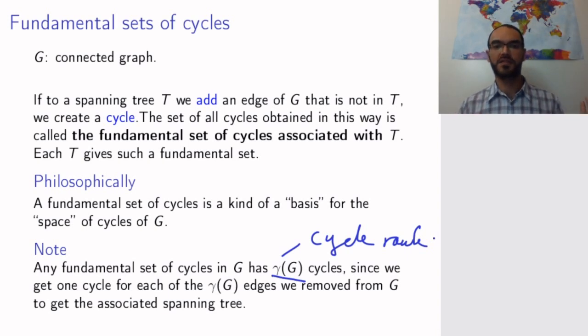So, any fundamental set of cycles associated to a tree T will have this number of cycles. And remember again that if I took a different spanning tree, I will get a different set of cycles, but it will also contain this number gamma G of cycles. So, the cycle rank is called the cycle rank, because it is the number of cycles in any fundamental set of cycles in the graph. How many times did I say cycles?